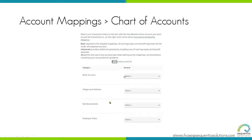When going through the integrations on the basic account, these are the four. It's just a matter of clicking the dropdown for your bank account, payroll from wages, reimbursements, and employer taxes. That's going to cover you for everything you need at a simple level.